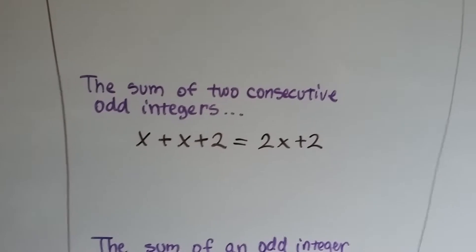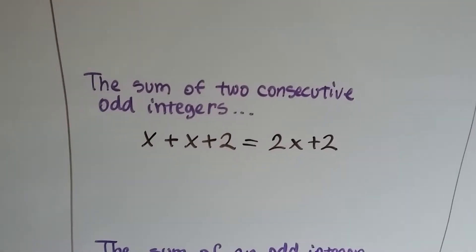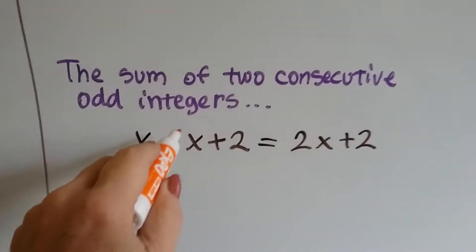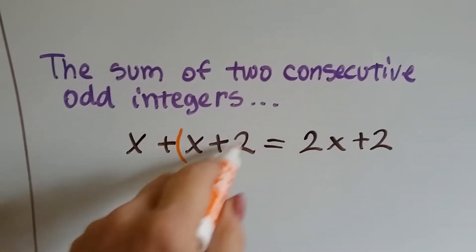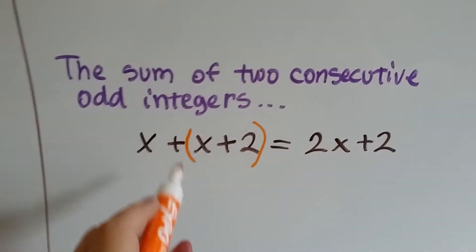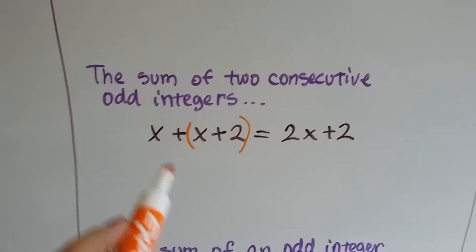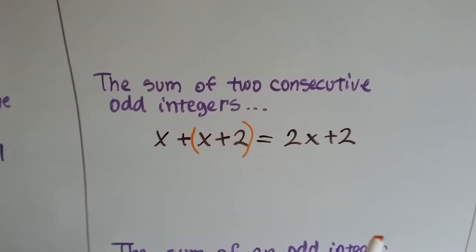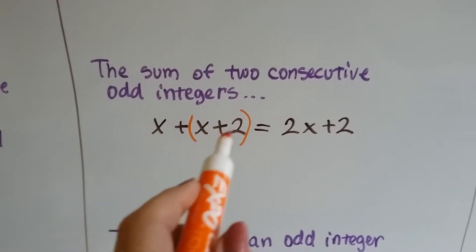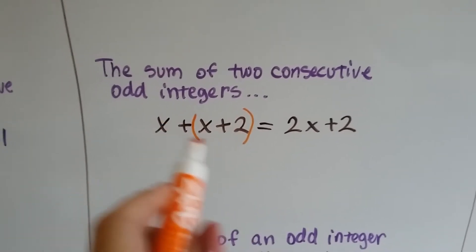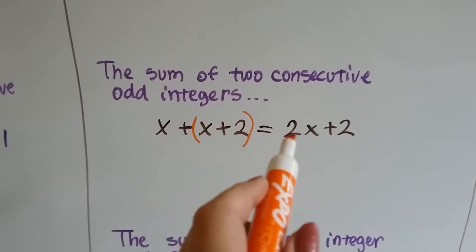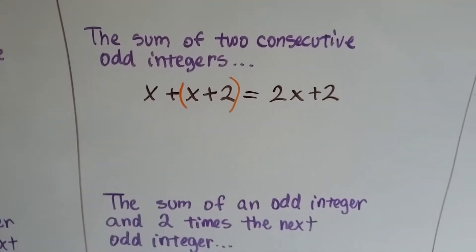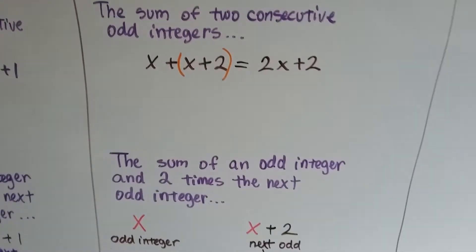The sum of two consecutive odd integers would be x as the integer and x plus 2 as the next one. Because they're odd, we skip count by 2. So that would be combined as 2x plus 2. That would be our equivalent equation.